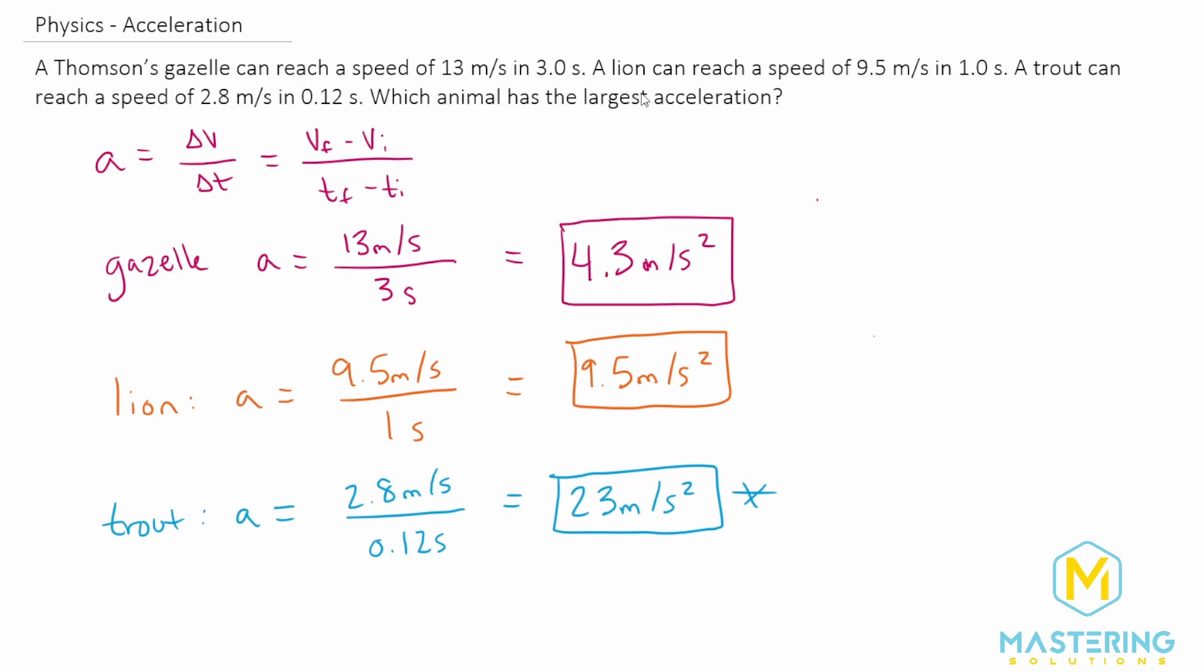But the trout's time is so much smaller compared to the others. Even though the velocity isn't very fast—it's the slowest of all of them velocity-wise—the acceleration is way quicker because of the short burst and the very short time it's able to reach that velocity in. So here are the three answers, and the trout has the fastest acceleration of the three.